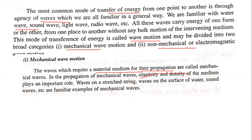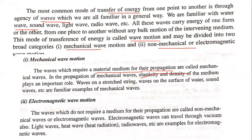That kind of motion is called mechanical wave motion. Electromagnetic wave motion is non-mechanical wave motion. The waves which do not require a medium are called electromagnetic waves. Electromagnetic waves can travel through vacuum also. Light waves, heat waves, and radio waves are examples of electromagnetic waves.